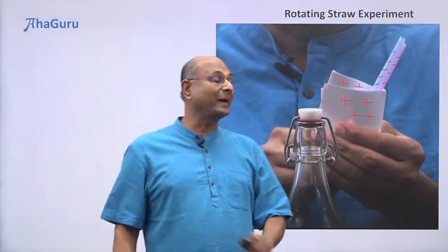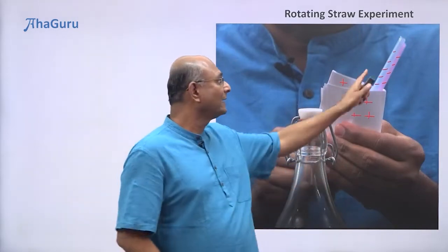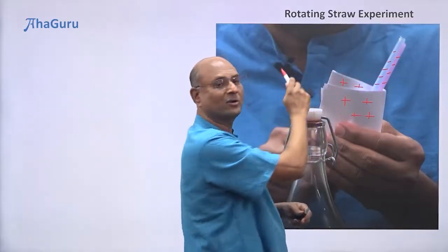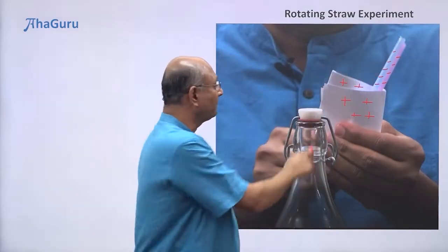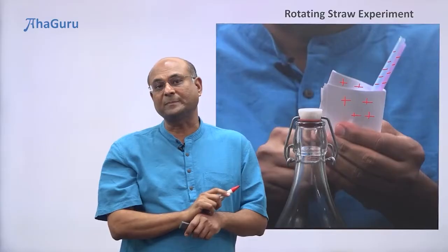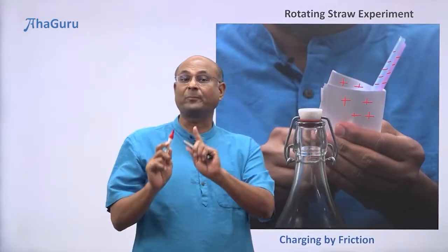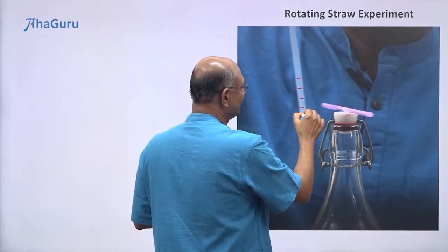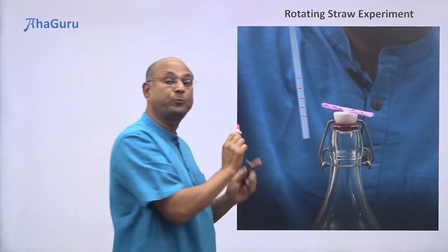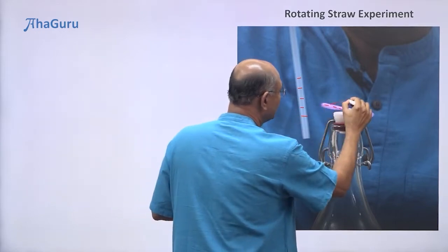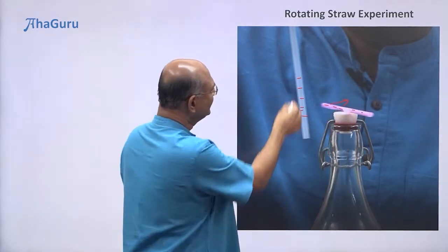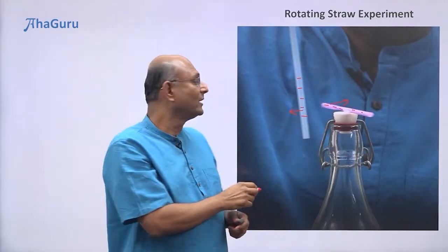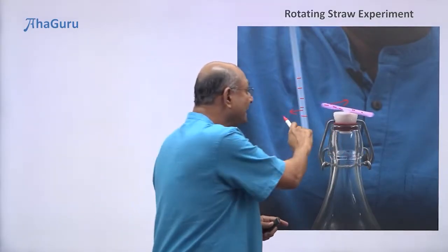In this experiment, when you rub the straws on the paper, the straws become negatively charged — they pull the electrons — and the paper becomes positively charged. Why? Because the straws are made of plastic and plastic has more electron affinity than paper, so it takes the electrons while the paper gives them up. Electrons from the paper jump to the straw, so the paper becomes positively charged and the straws become negatively charged. This is an example of charging by friction. We also saw that these negatively charged straws push each other — like charges repel.